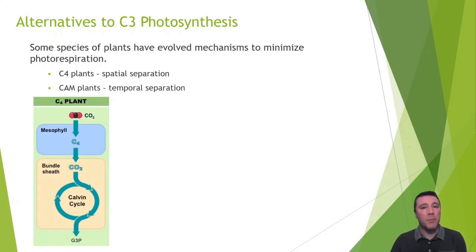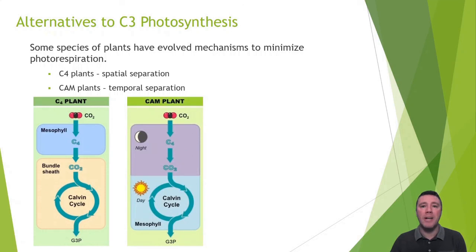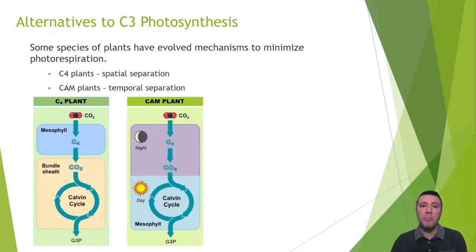Crassulacean acid metabolism, or CAM plants, utilize a different method to accomplish the same goal. CAM plants have their stomata open at night, when the risk of dehydration is relatively much lower. During this time, carbon dioxide is fixed to an organic acid, at which point the Calvin cycle stops — because in order to move on to the reduction stage, ATP and NADPH are necessary, and they can't be formed in the dark. When the sun rises in the morning, CAM plants begin to close their stomata and the light reactions start up. ATP and NADPH production ramps up, allowing the remainder of the Calvin cycle to take place. Because the fixation of carbon dioxide and the remainder of the Calvin cycle are occurring at two different times, we say that CAM plants have a temporally separated Calvin cycle.